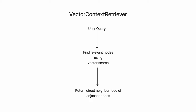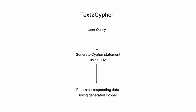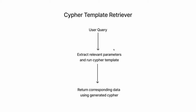The next one is the vector context retriever. Here we use embeddings to find relevant nodes through vector search and then return the direct neighborhood of adjacent nodes. We create embeddings for text nodes as well as graph nodes, and for the query we do a cosine similarity to get the relevant nodes. The next one is text to cipher, which generates Cypher statements using an LLM for the given query, and based on the generated Cypher statement returns the corresponding data. In the cipher template retriever, from the user query we extract relevant parameters based on an already available template and then run the cipher template, which gives an answer for the given query.